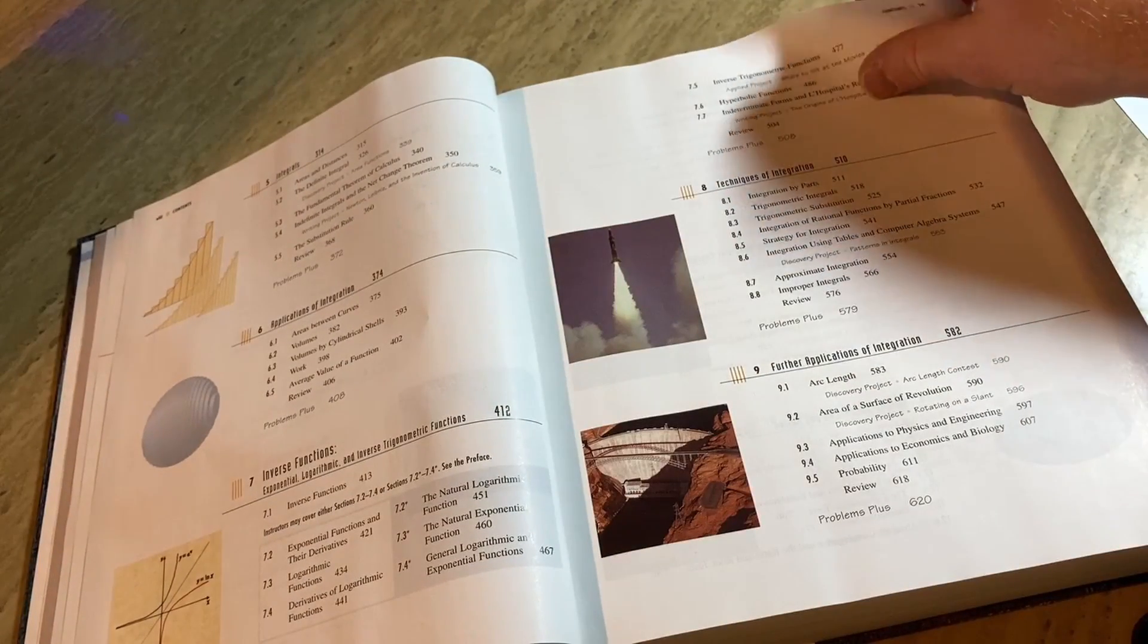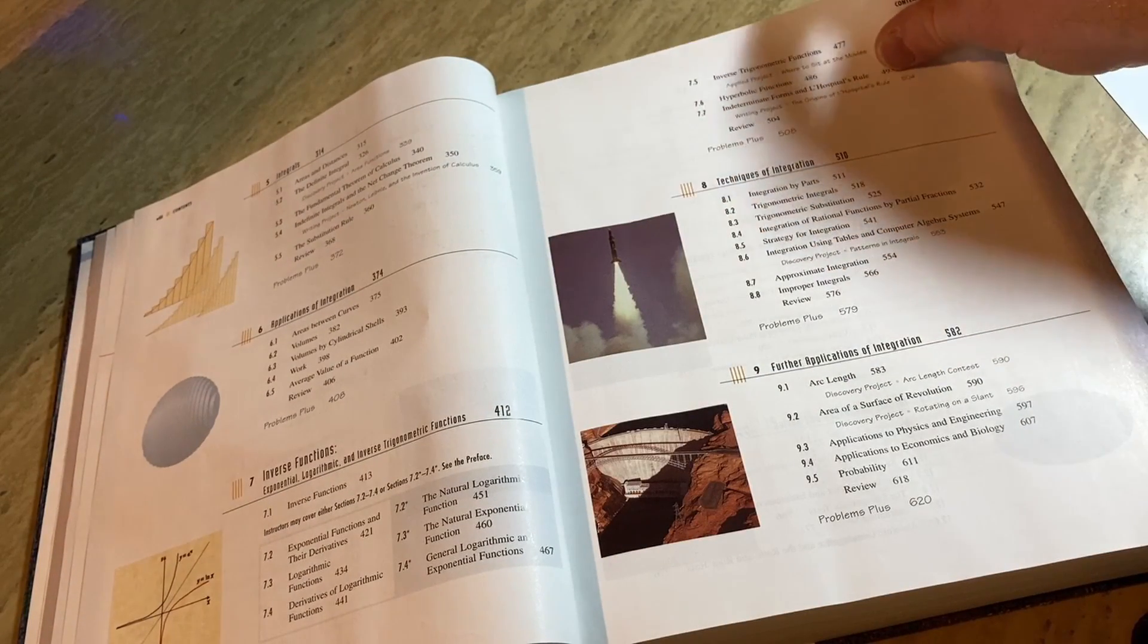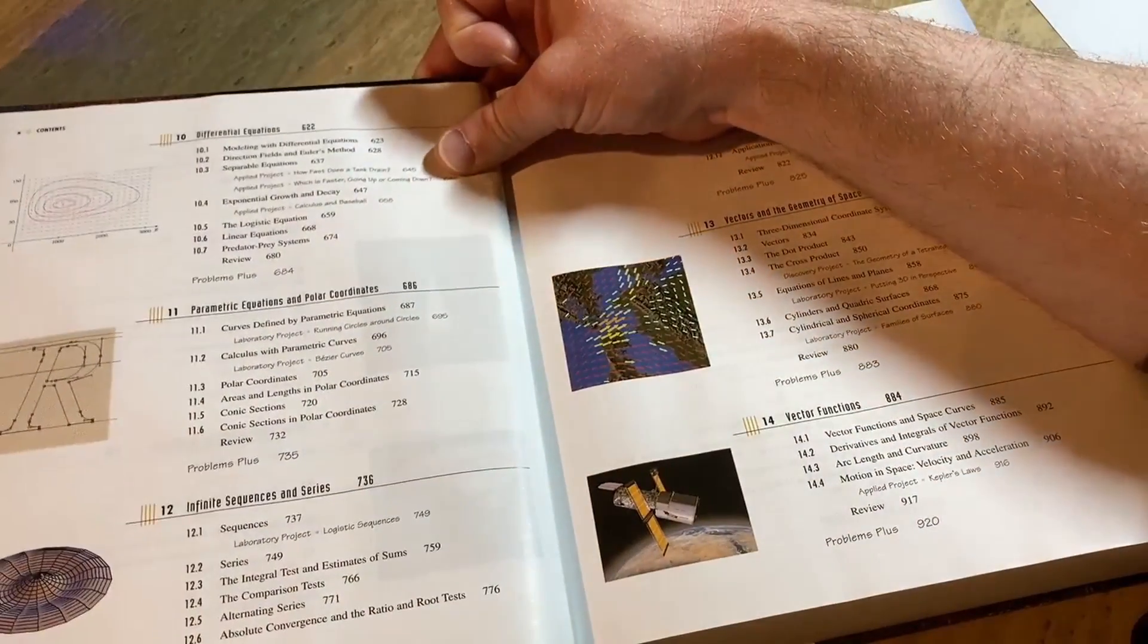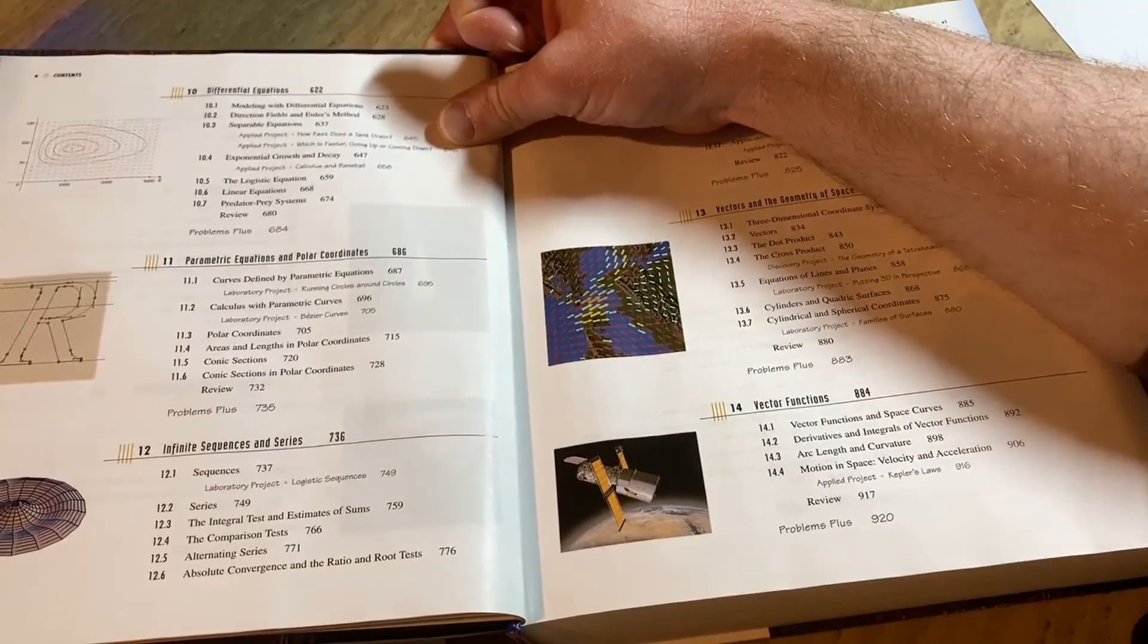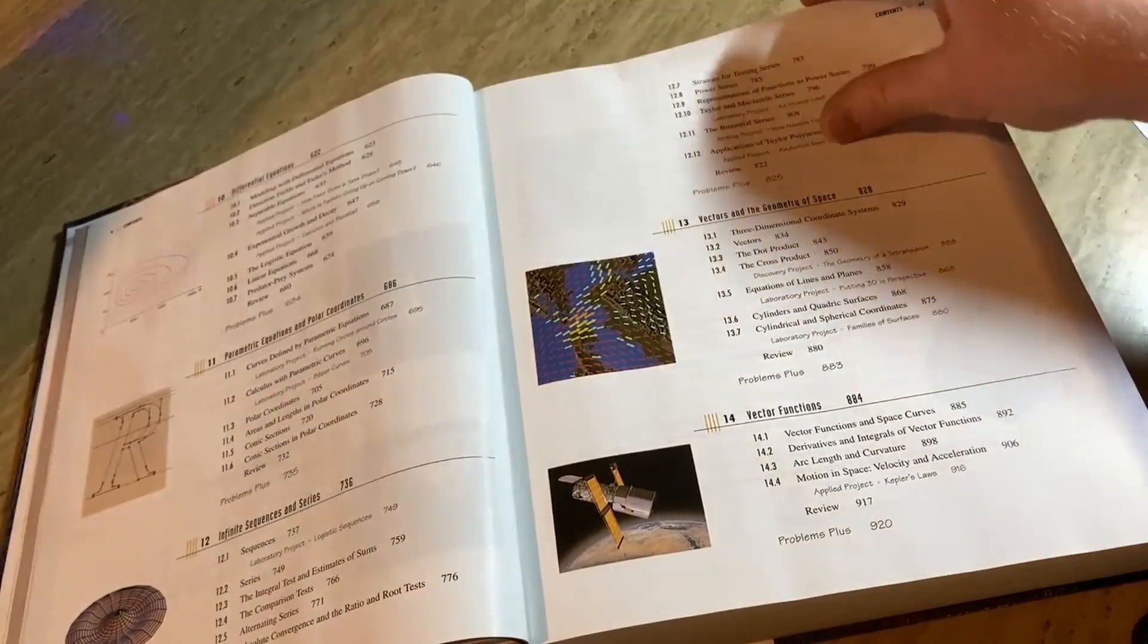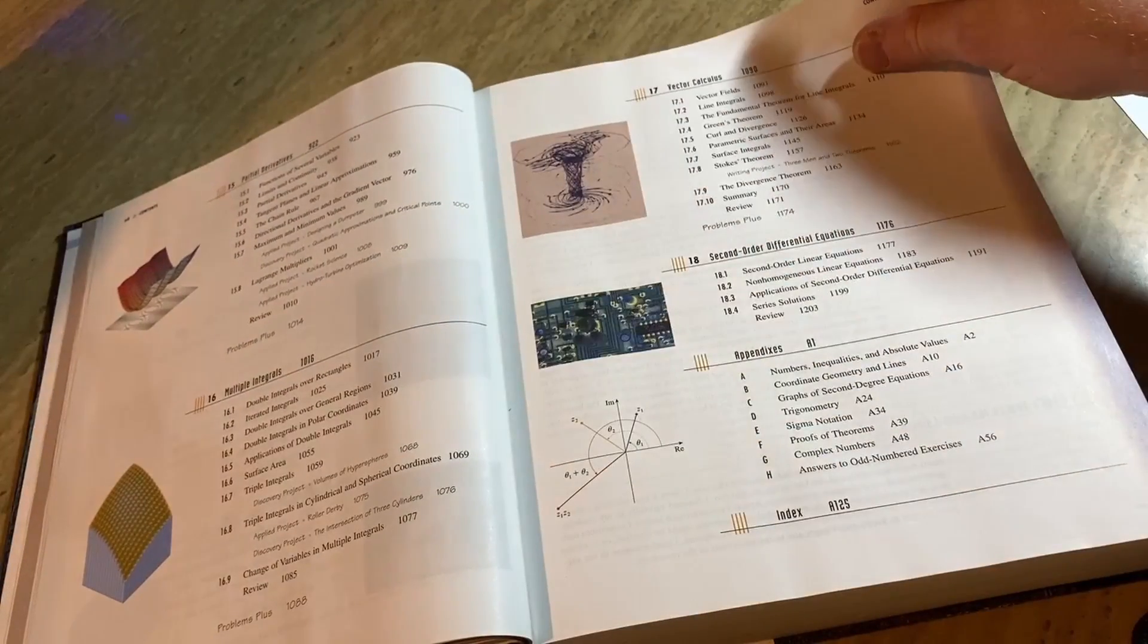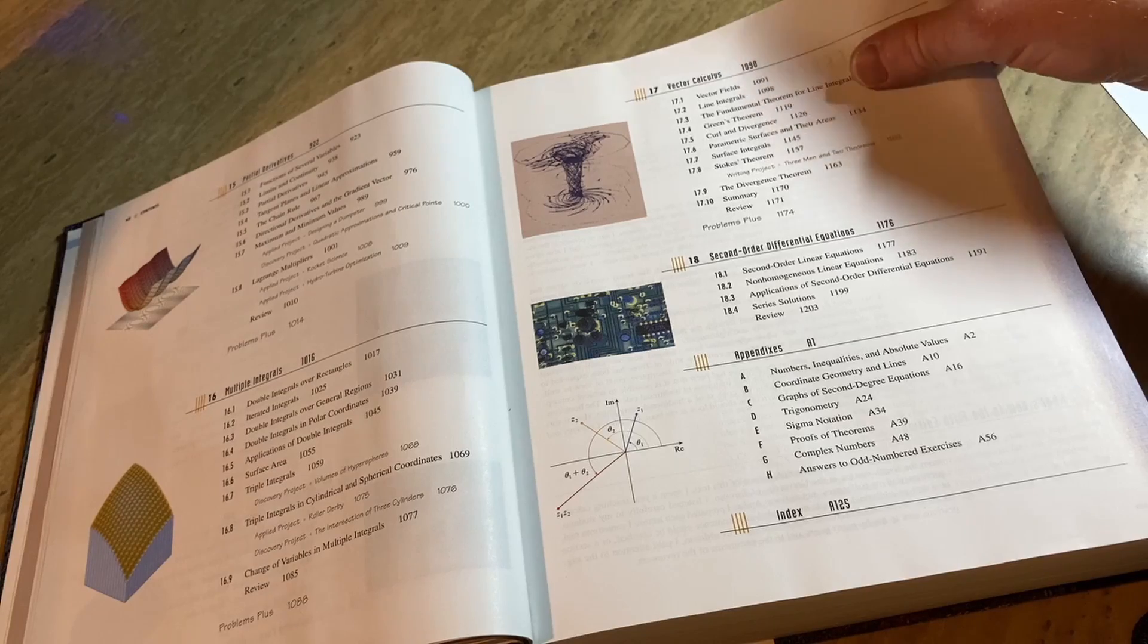So this book has the standard topics that are taught in the U.S. for Calc 1, Calc 2, and Calc 3. It's also used in Canada. James Stewart was a Canadian mathematician. So I'm pretty sure this is used in Canada. And I know this book, they have it in Spanish. I've seen it in Spanish. It's used in other countries as well.